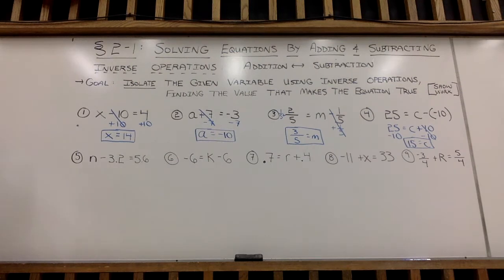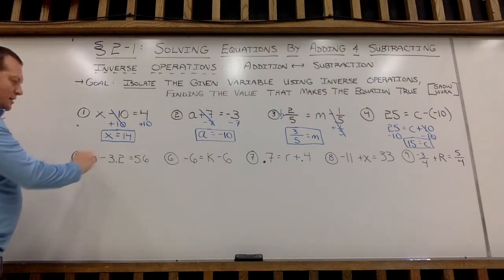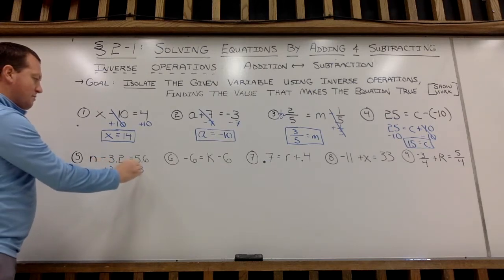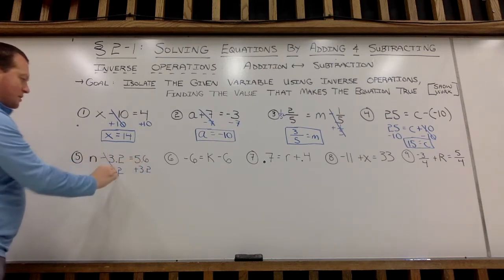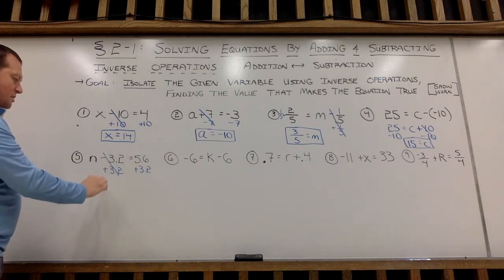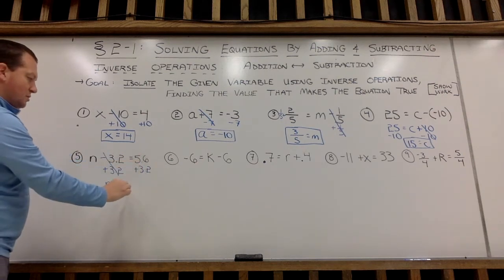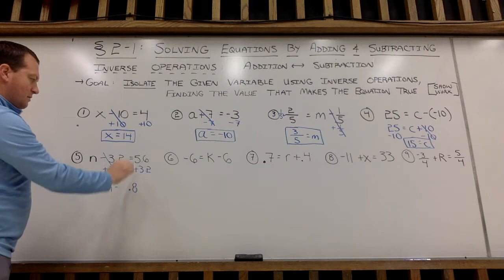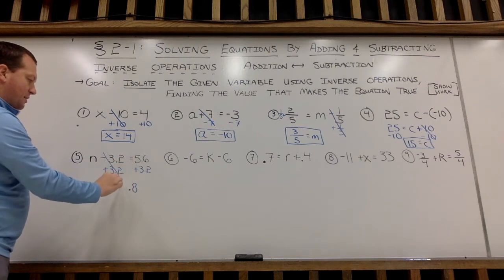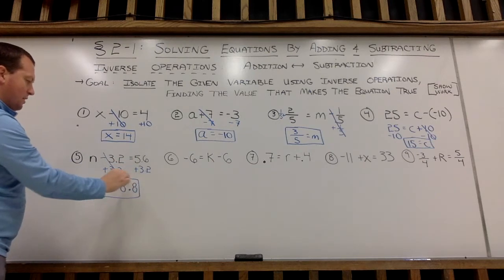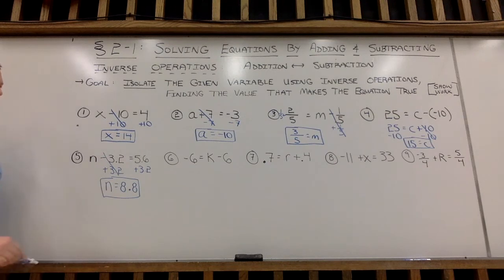Got some decimals. Example 5: to get n alone, I'm going to undo subtracting 3.2, so I'll add 3.2 to both sides. The minus and plus cancel out. n will equal 6 and 2 make 8, and 5 and 3 make 8, so 8.8 will be the n value.